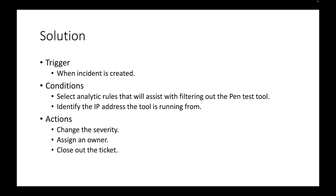For our solution: first, look at the trigger — when an incident is created. Then set the conditions: select the analytic rules that will assist with filtering out the pen test tool, and identify the IP address the tool is running from. Then for actions: change the severity, assign an owner, and close out the ticket.